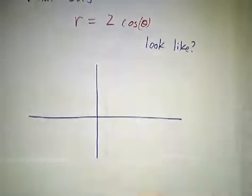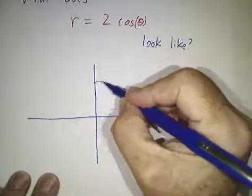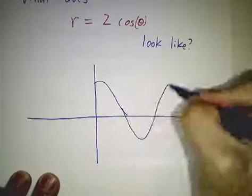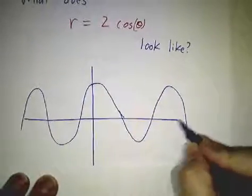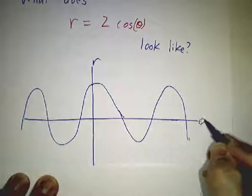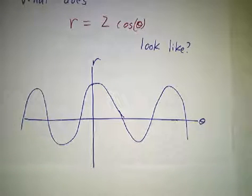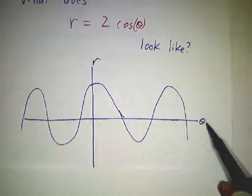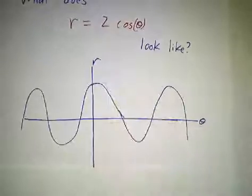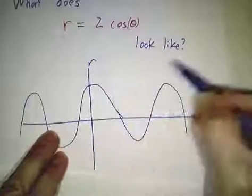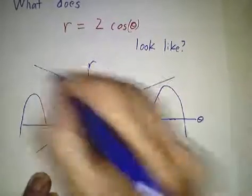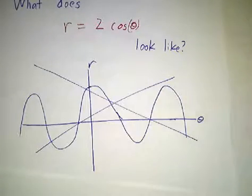And now, you might be tempted to say, I know what cosine theta looks like. But that's a plot of r versus theta. That's really Cartesian coordinates where you just happen to call the x-axis theta and the y-axis r. No, we want something where theta is the angle and r is the distance. And so this plot is just flat out wrong.